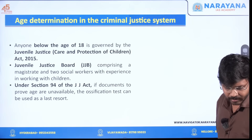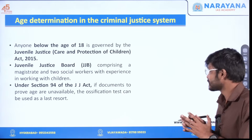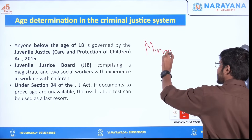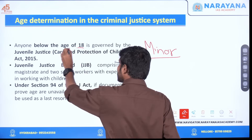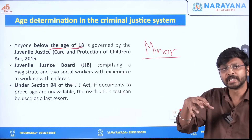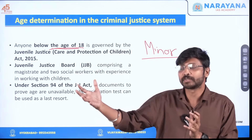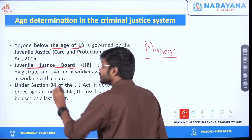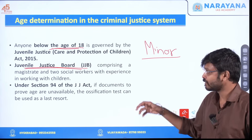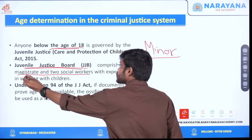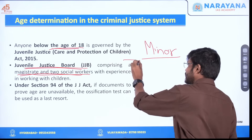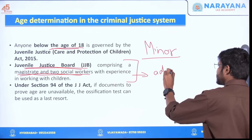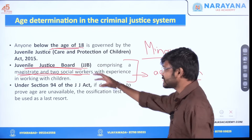Now let us see how this is important in the criminal justice system. Anyone who is below the age of 18 is considered a minor. Our criminal justice law differentiates between an adult and a minor. If an adult is convicted, he will be sent to prison. But that cannot be done to a child. For a minor, the juvenile justice board — consisting of a magistrate and two social workers — will decide whether he should be sent to an observation home or, sometimes, it can just be an admonition, meaning he can be let off with a warning. All these things are under the discretion of the juvenile justice board.